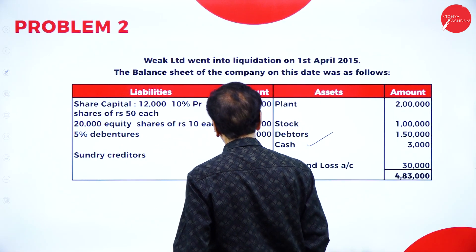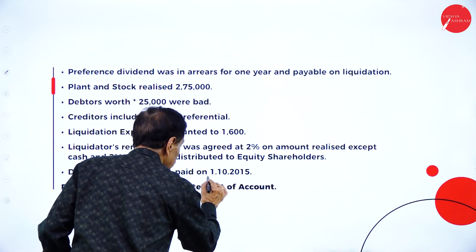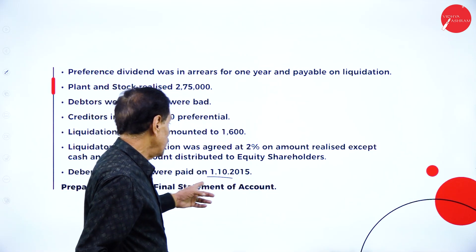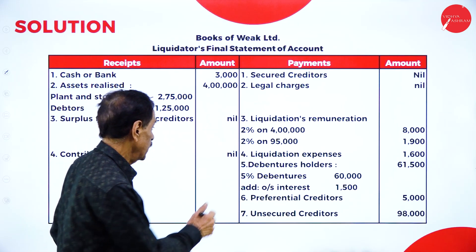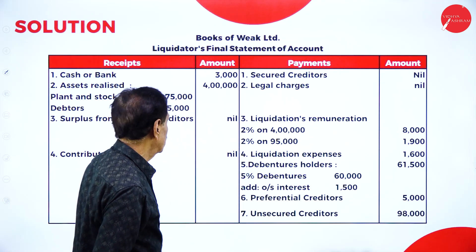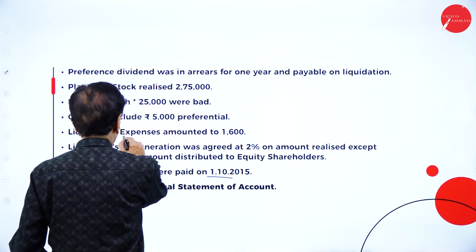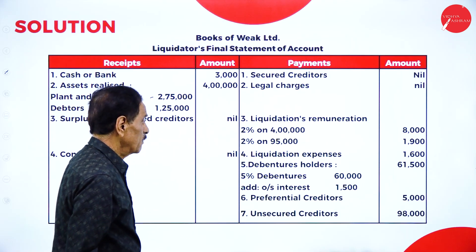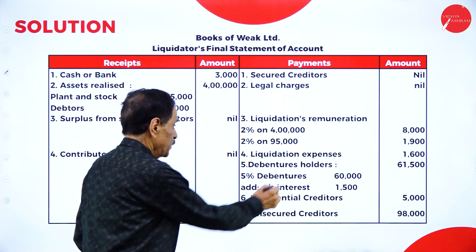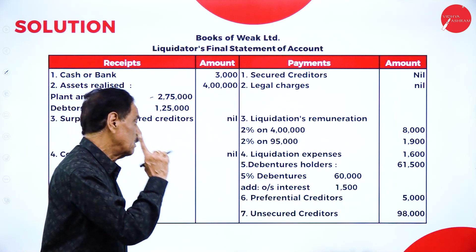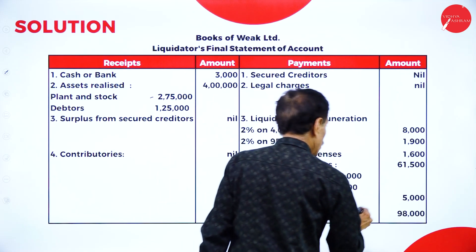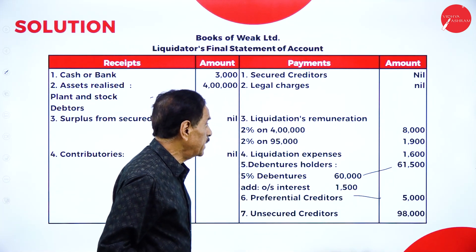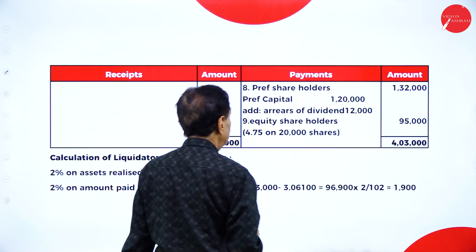The balance sheet date is 1st April, and payment is made on 1st October — that is 6 months. So you calculate interest for 6 months. The rate of interest is given. Debenture value plus interest: Rs.60,000 at 5% for 6 months = Rs.1,500 interest; total Rs.61,500. Preferential creditors: Rs.5,000. Unsecured creditors: Rs.98,000. Preference shareholders: Rs.1,32,000 — that is share capital Rs.1,20,000 plus one year's dividend at 10% = Rs.12,000.